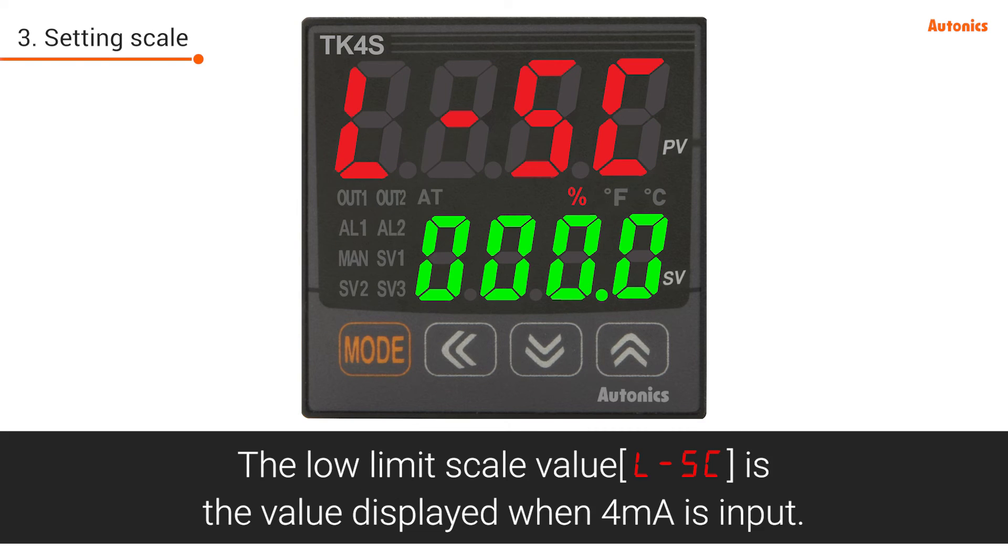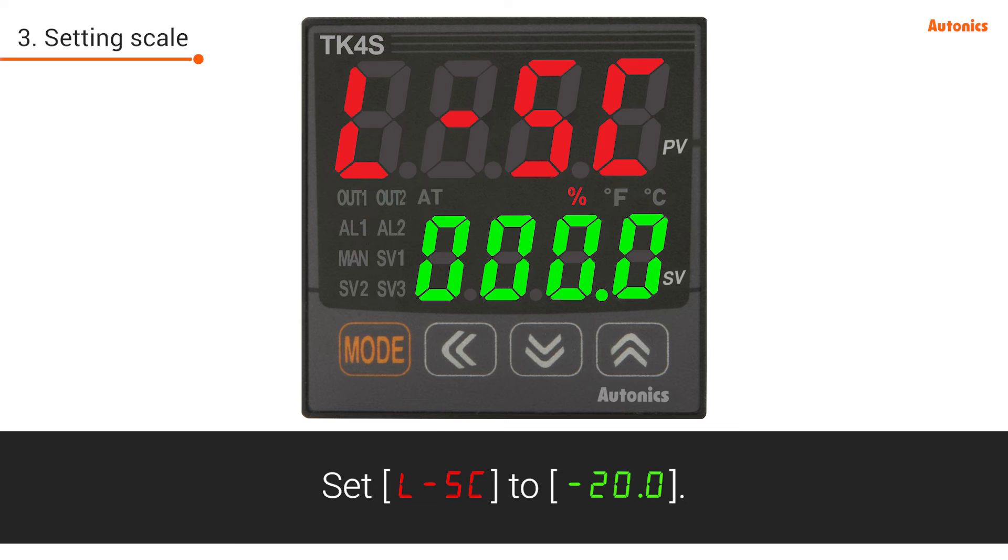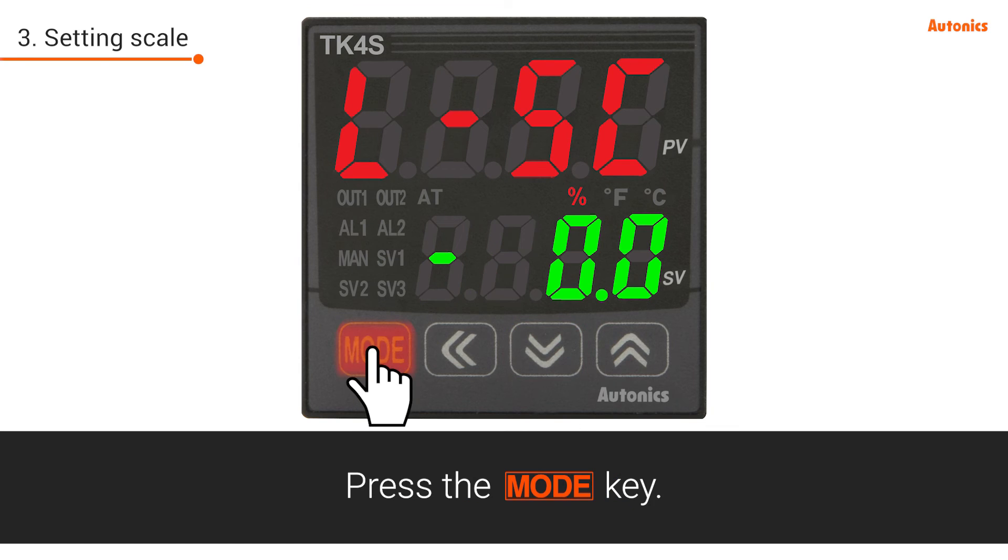The low limit scale value is the value displayed when 4 mA is input. Set L-SC to minus 20.0. Press the mode key.